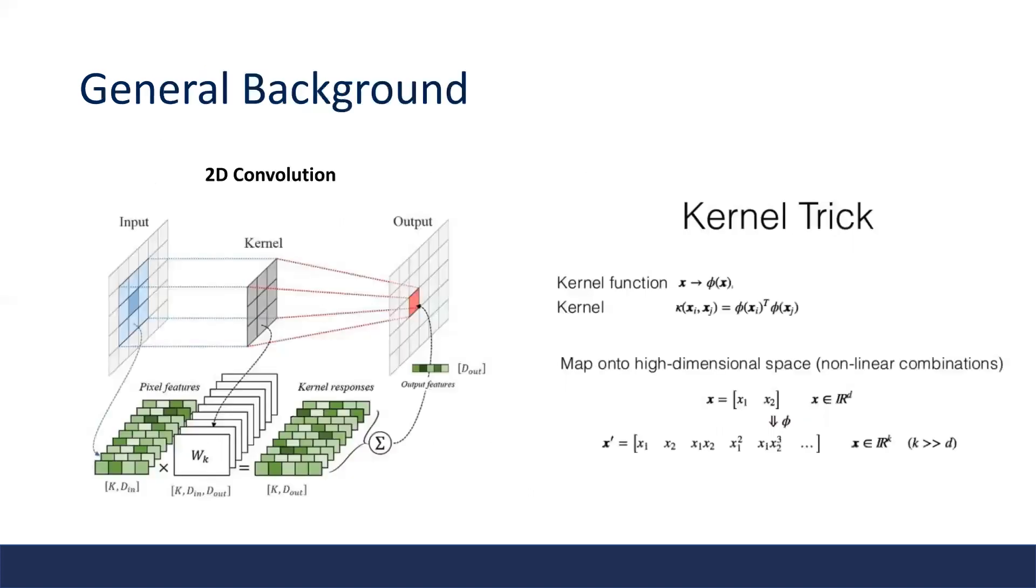Here we revisit two simple concepts to better understand the paper. First is 2D convolution, where we apply a translation invariant kernel in a sliding window manner to the input image. The kernel shape is usually grid-like, which defines the shape and size of the local neighborhood.